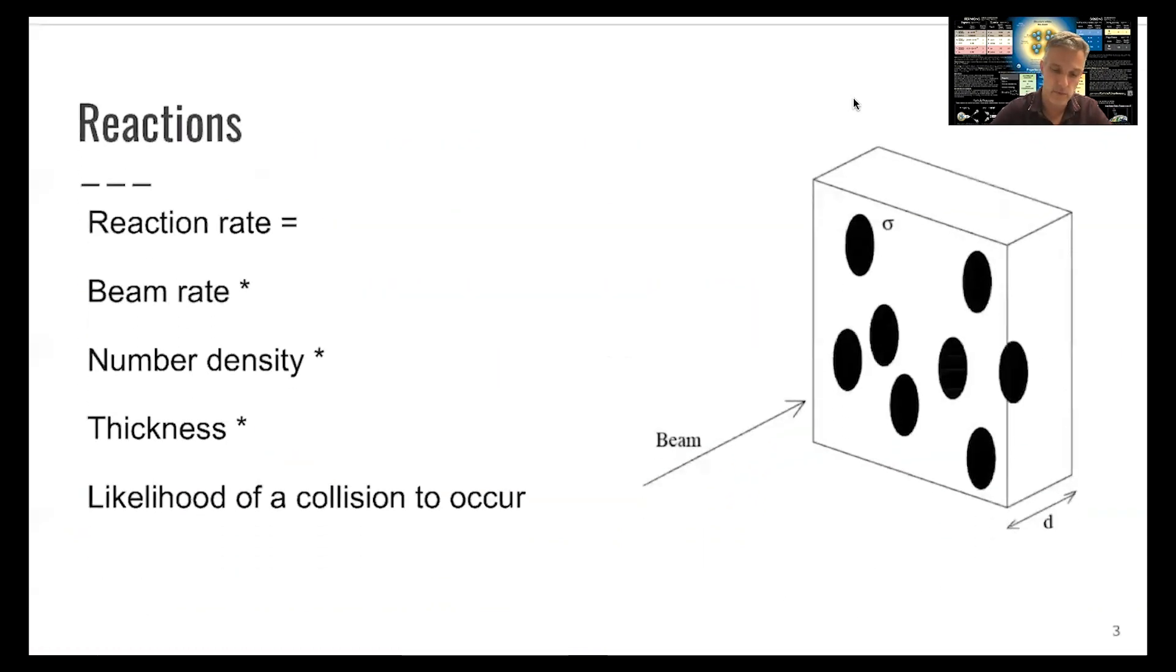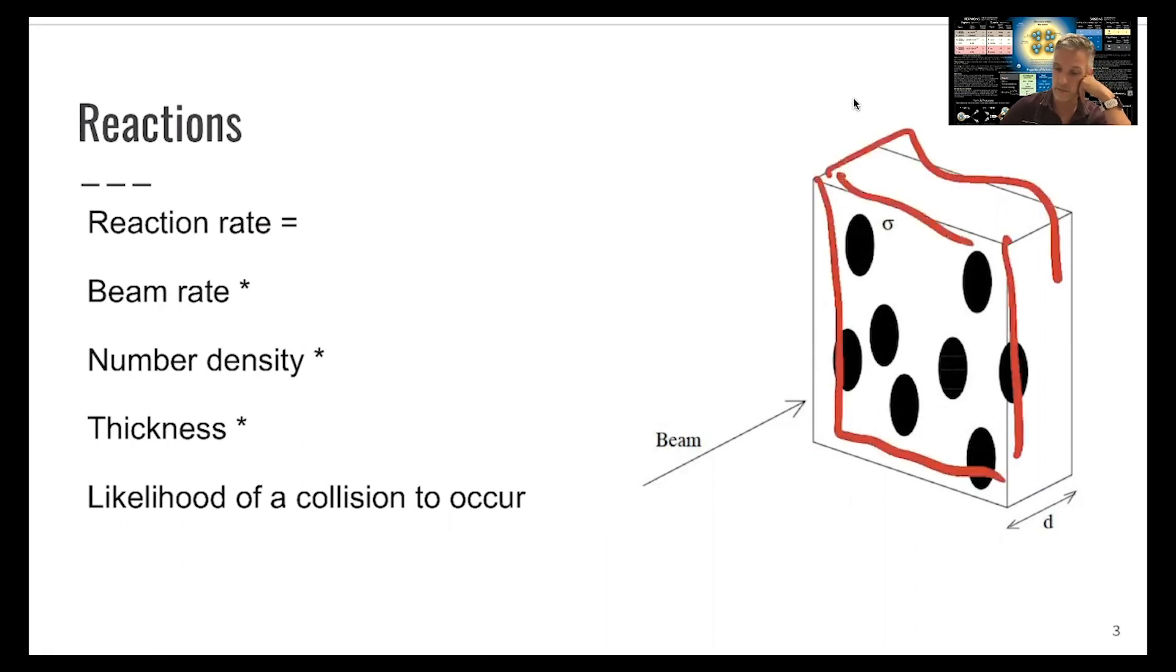And we can start doing this by looking at this simplified picture. So the reaction rate is related or is equal to the rate of the beam - how many particles per second are available for the interactions - times the number density of the particle in the target. So you have your target here, and clearly, the number of reactions depend on how dense your target is.